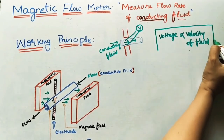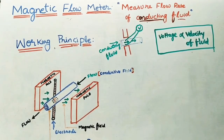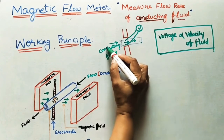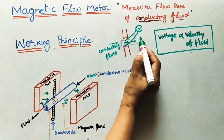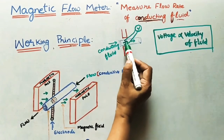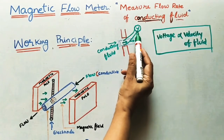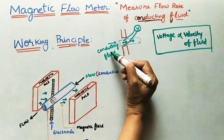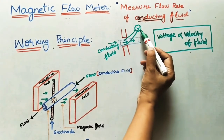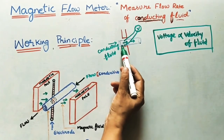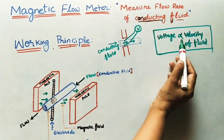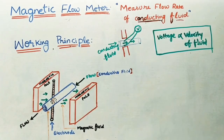This is the working principle of this flow meter. We take the magnets, generate the magnetic field, and send the conducting fluid through a non-conducting pipe. Whenever this conducting fluid cuts the magnetic field, voltage will generate, and this voltage gives the velocity of the conducting fluid. If velocity is more, the voltage is also more. If it is flowing slowly — less velocity — the voltage is also less. The voltage is proportional to the velocity of the conducting fluid.